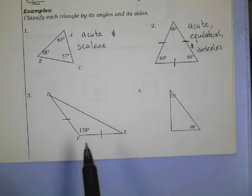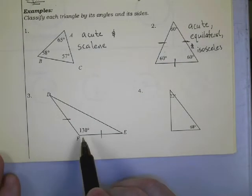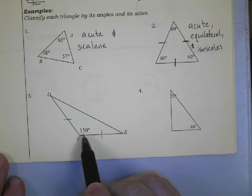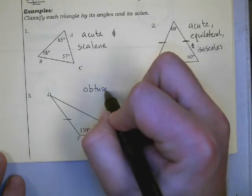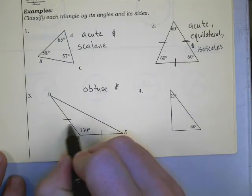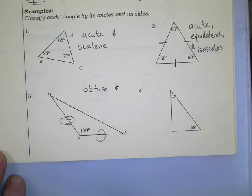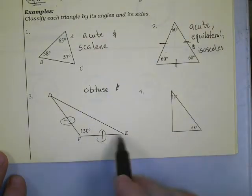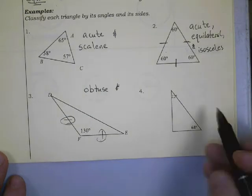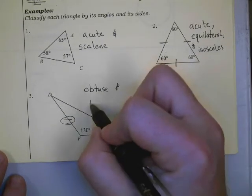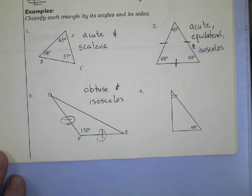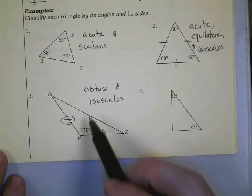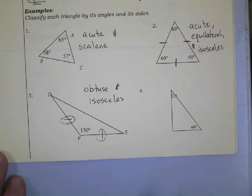When we look at number three, it has an angle greater than 130 degrees, so that is obtuse. And I have two tick marks indicating two equal sides. When we have two or more equal sides, we know it's isosceles. Since there are only two equal sides and not all three, it's only isosceles — if all three sides were equal, it would be equilateral.